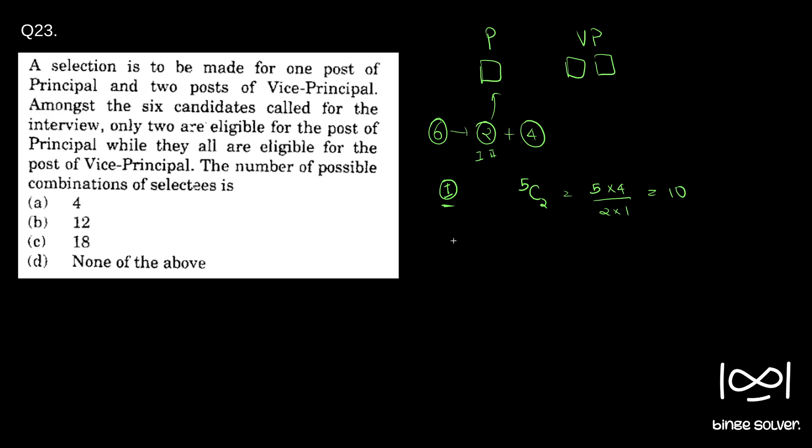Similarly, when 2 is selected as the principal, again there is 5C2 ways to select vice-principal. So 5C2 ways in selecting vice-principal, total 10 ways.